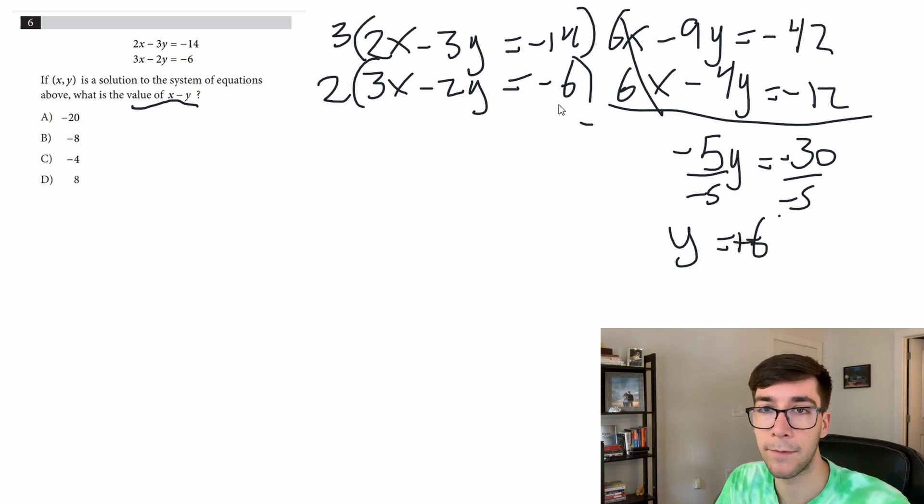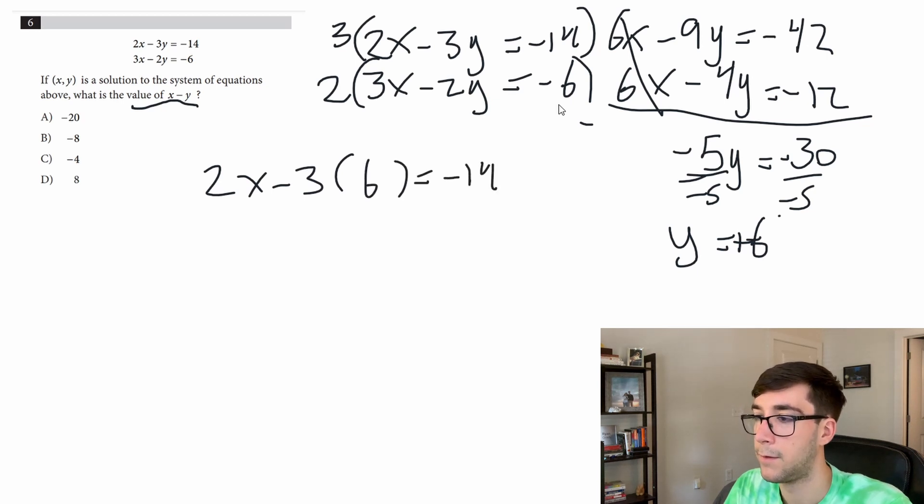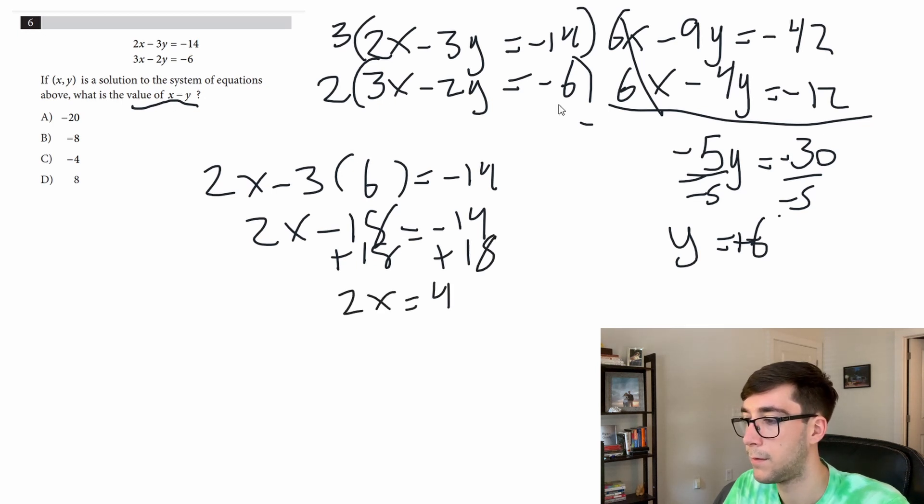Now to get the other variable we plug back in either equation to find x. So let's do 2x minus 3, and we know y is 6, equals negative 14. So 2x minus 18 equals negative 14, add 18 to both sides, 2x equals 4, so x equals 2.